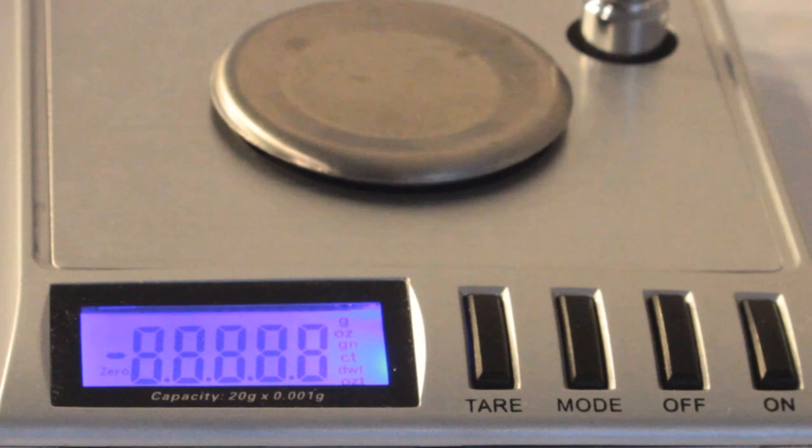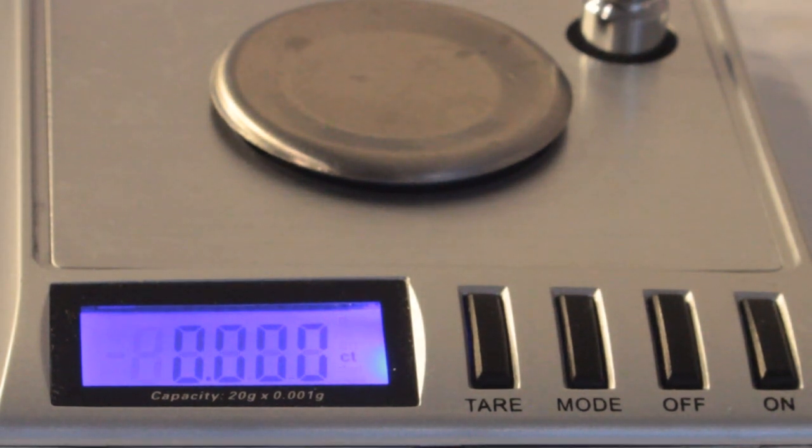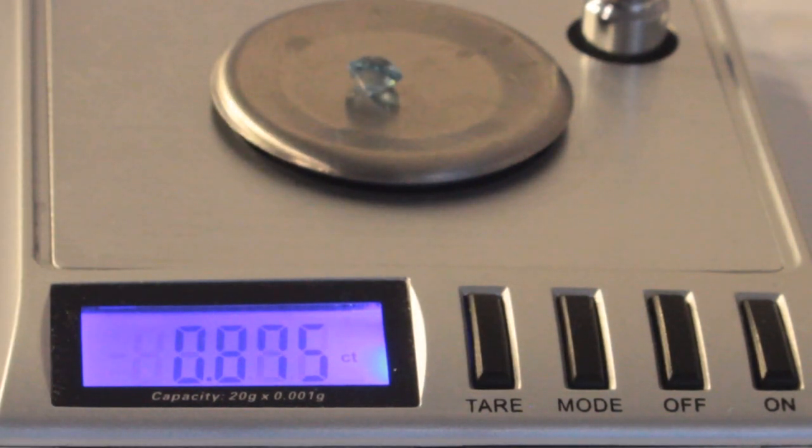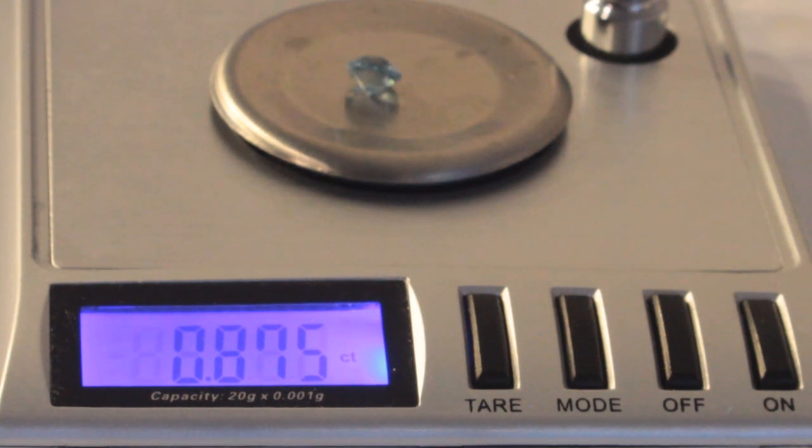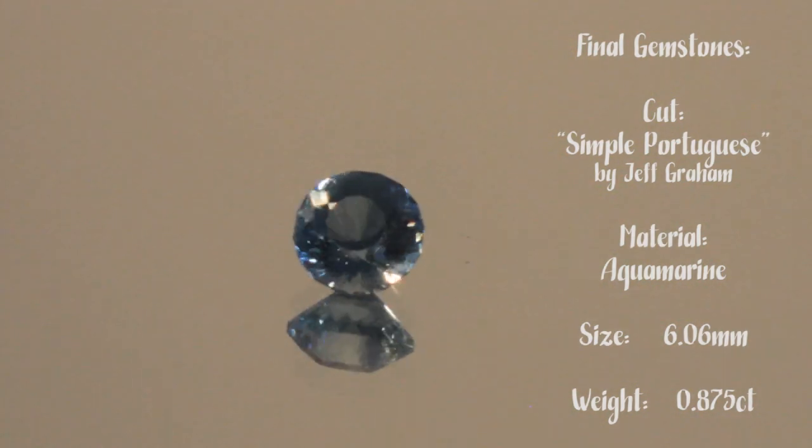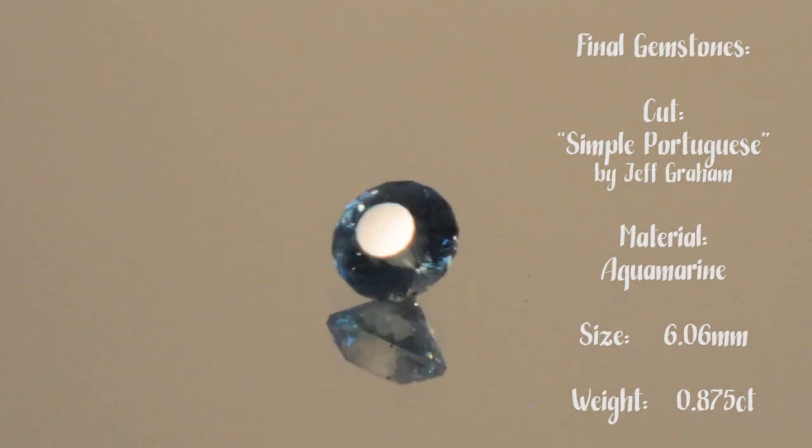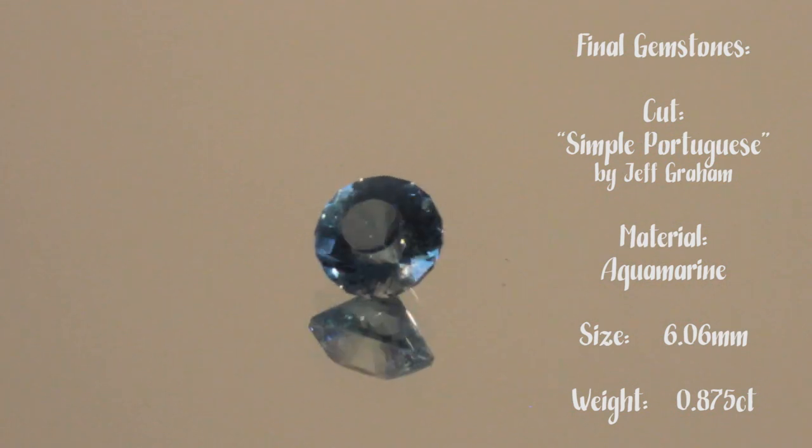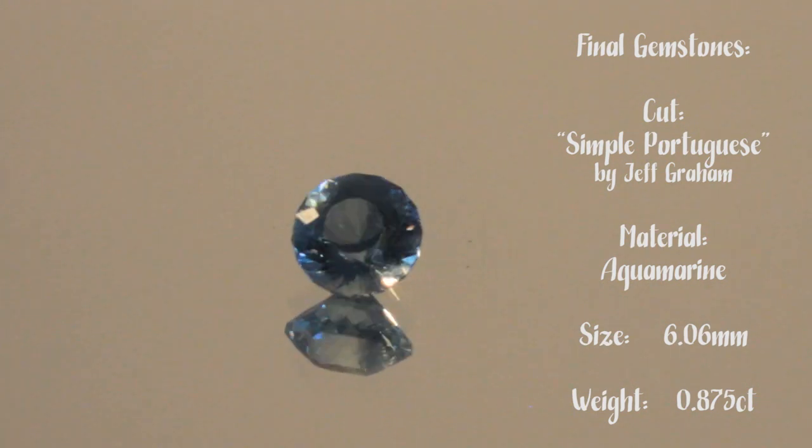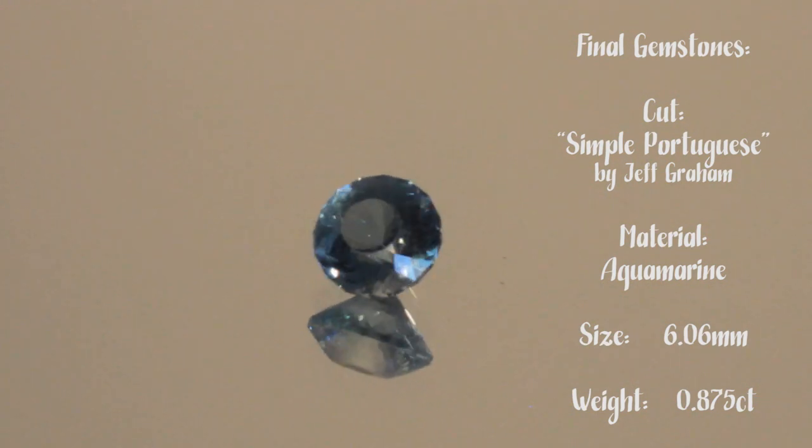In this video, I continued working my way through a small lot or parcel of preformed aquamarine from Nigeria. This particular piece was already preformed into about a 6.5, 6.6 millimeter round shape. And I didn't lose much in turning it into a 6.06 millimeter Portuguese cut. I did have a viewer request that I show more of the actual cutting of the gemstone. So give me some feedback and please let me know in the comments if you like me showing more of the actual cutting or not. The Portuguese cut is not a difficult cut and I believe any cutter could cut this design, but it does take a while longer because of all the facets you need to cut and polish and make sure they meet.